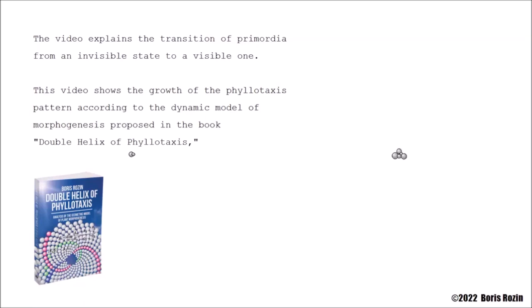The video explains the transition of primordia from an invisible state to a visible one. This video shows the growth of the phyllotaxis pattern according to the dynamic model of morphogenesis proposed in the book Double Helix of Phyllotaxis.